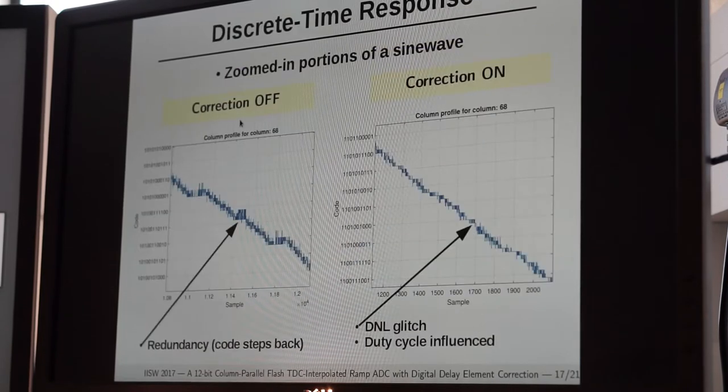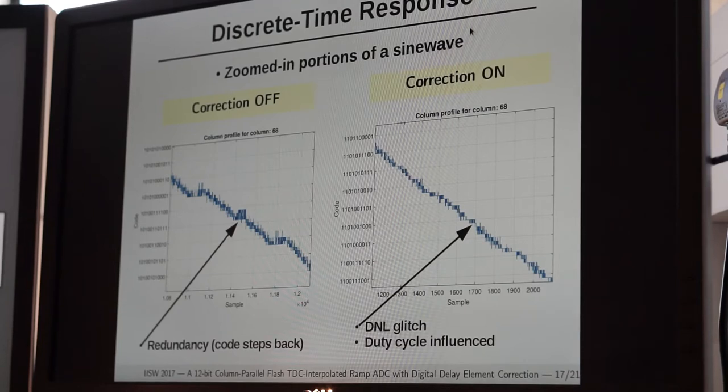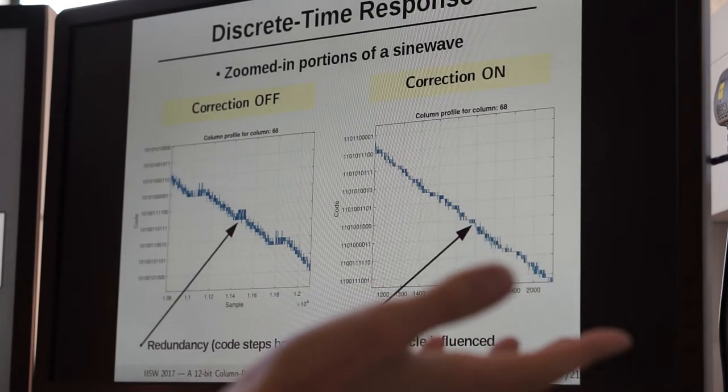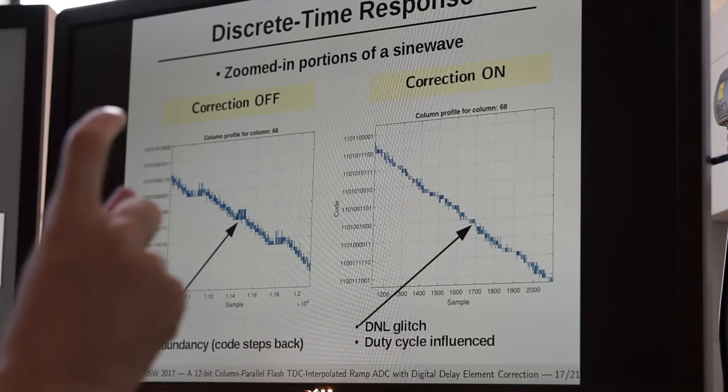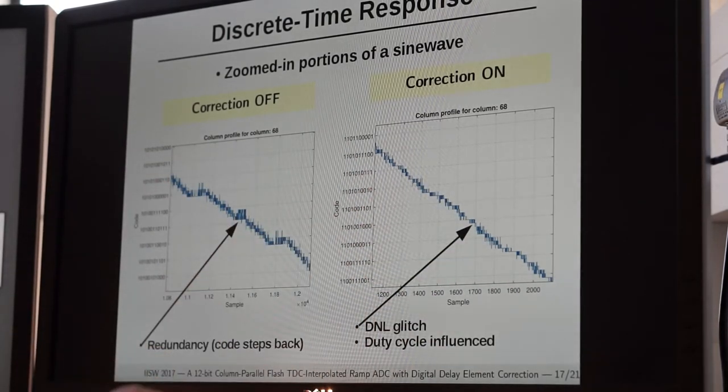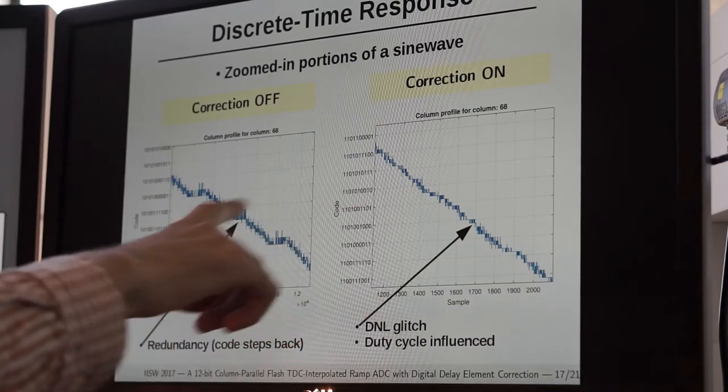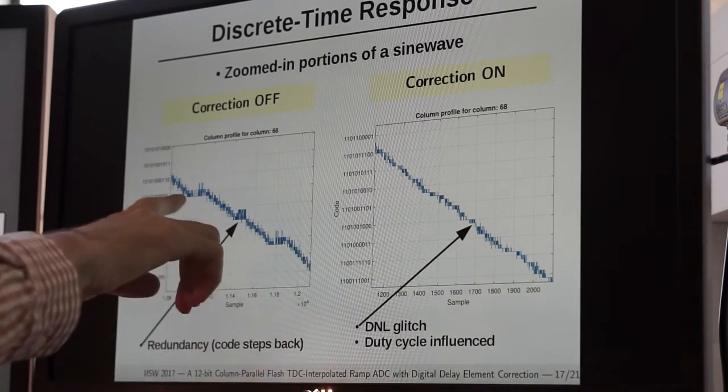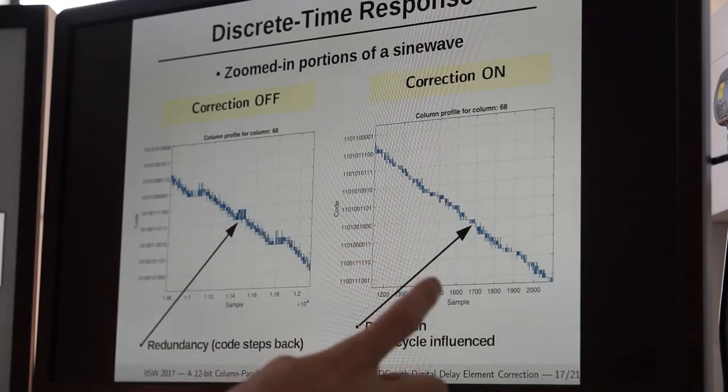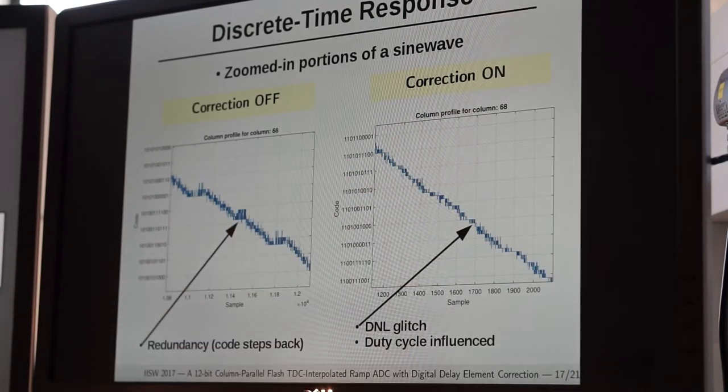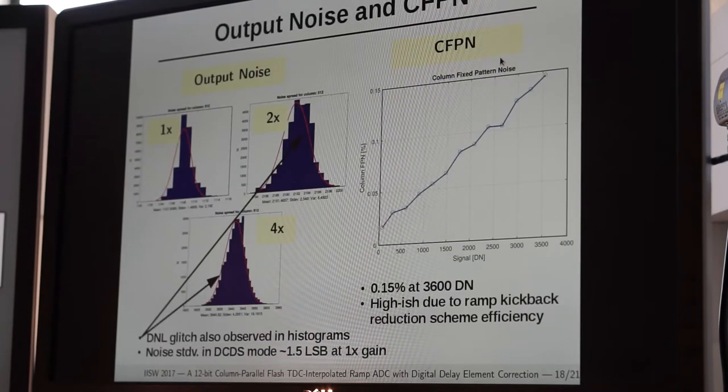If I show you the discrete time response of the ADC - what's observed on the screen are two plots when the ADC has been fed with a sine wave. We're looking at a very zoomed-in portion of that sine wave, so it almost looks like a ramp wave, although it is a sine wave - just the highest derivative portion. You can clearly see when the correction is off, here is the code step back. You can see the code redundancy. When the correction is on, the missing code or the DNL glitches are also observable in these discrete time plots.